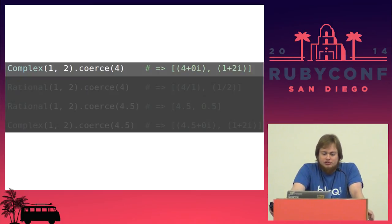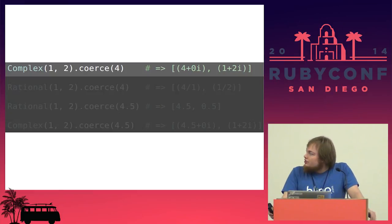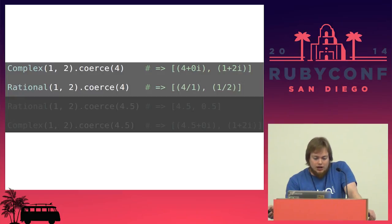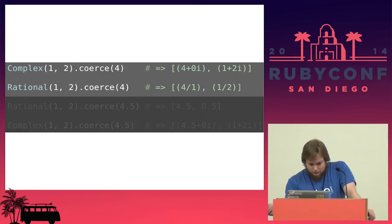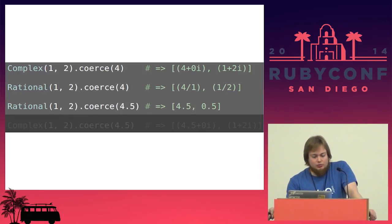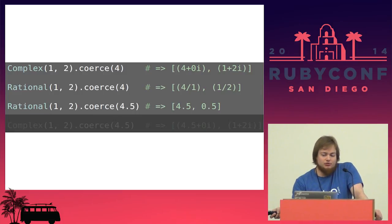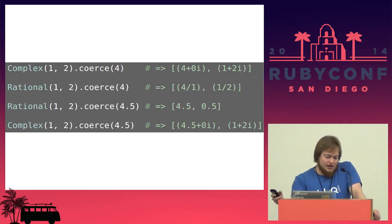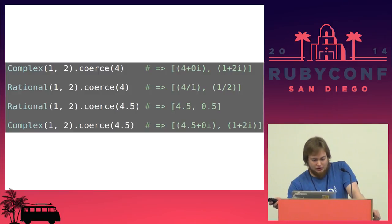Some more examples involving more esoteric numeric types in Ruby. Here, we're coercing the integer 4 with a complex, and it becomes the complex number 4 plus 0i. Here, we're coercing the rational 4 and it becomes 4 over 1. Here, the rational 1.5 coerces 4.5, and that coerces to a float. And here, we're coercing the float 4.5 to a complex, and it becomes a complex with a float as the first argument.